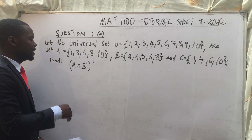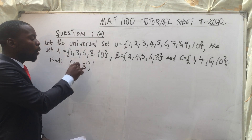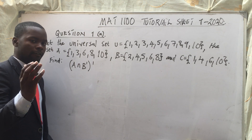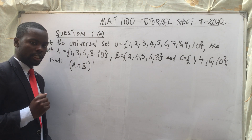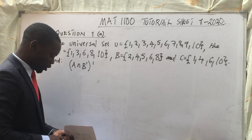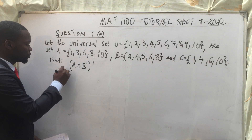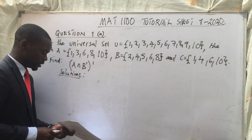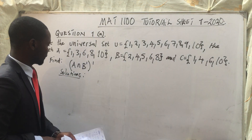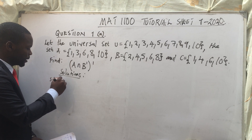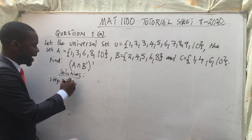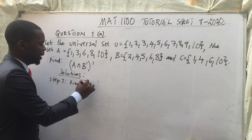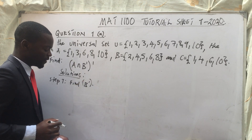The question is: find A intersection B complement — everything to the complement. Come and enjoy with me, step by step. So, step 1: let's find B complement.